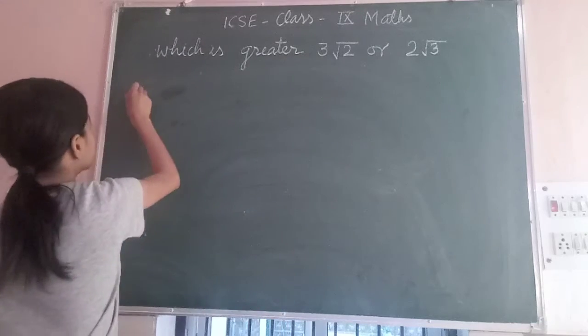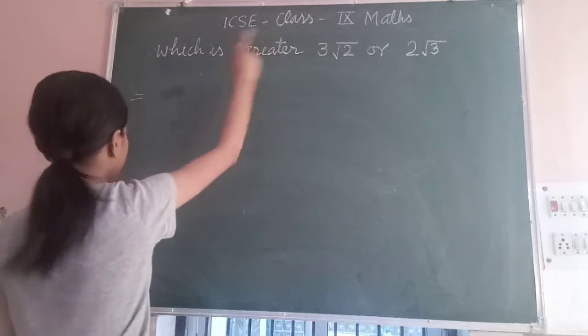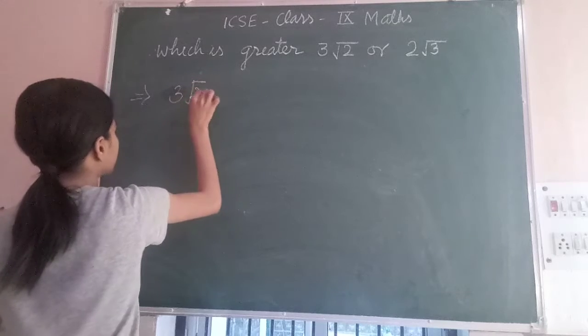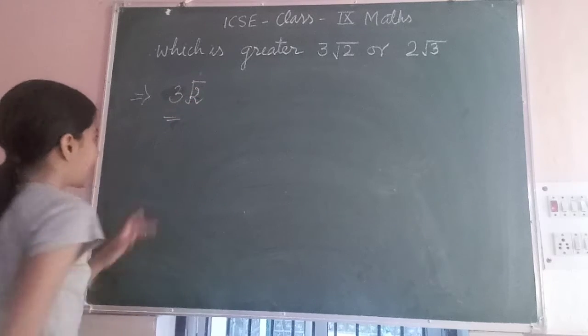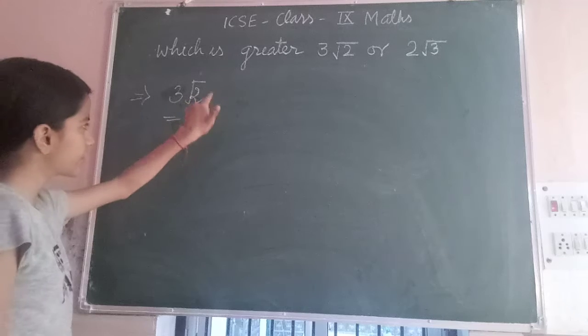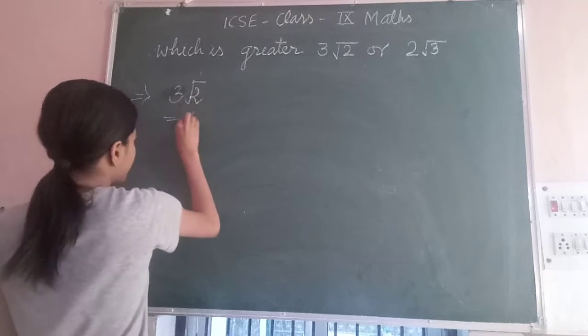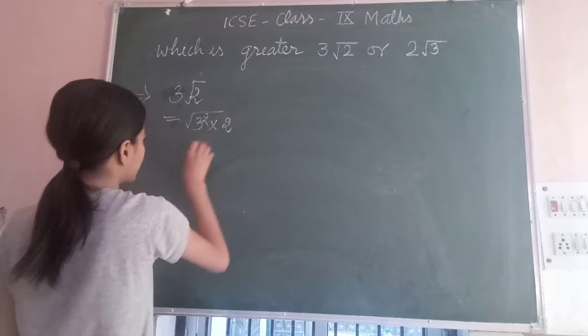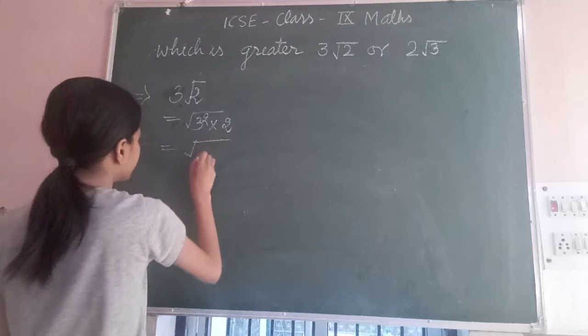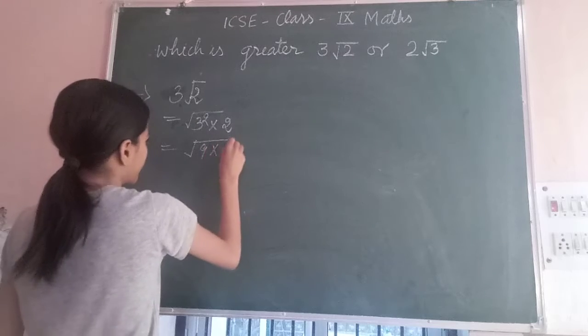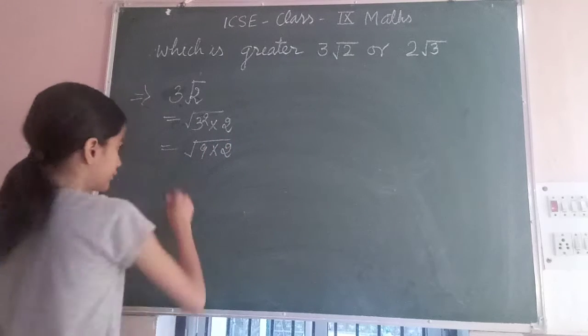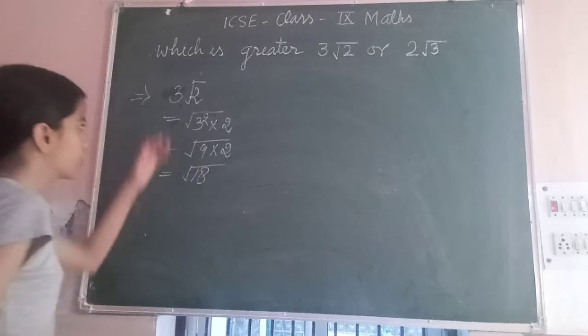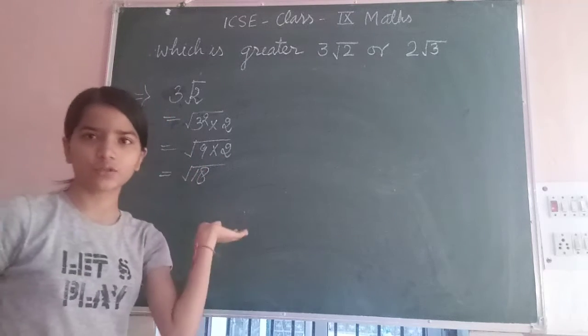First we will take 3√2. When we take 3 into √2, it will become 3 squared times 2, which equals 9 times 2, and 9 times 2 equals 18. So 3√2 equals √18.